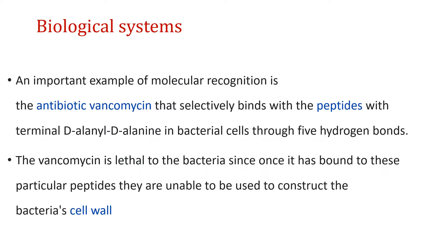We know about the antibiotic vancomycin. Vancomycin selectively binds with peptides with terminal D-alanine-D-alanine in bacterial cells through 5 hydrogen bonds. Vancomycin is lethal to the bacteria since once it has bound to these particular peptides, they are unable to be used to construct the bacteria's cell wall. This is an important example of molecular recognition.